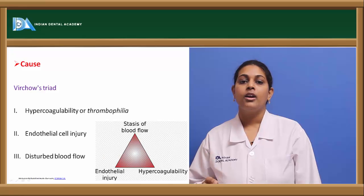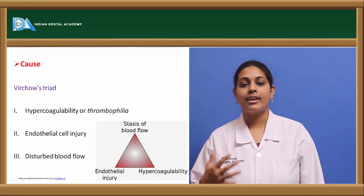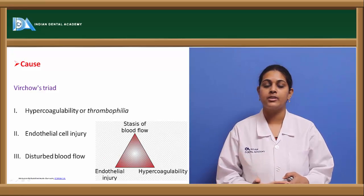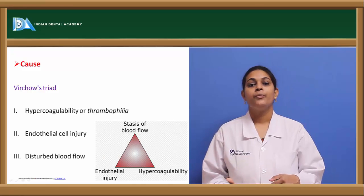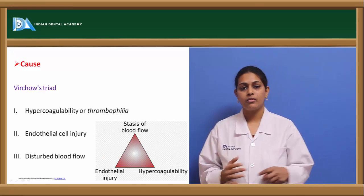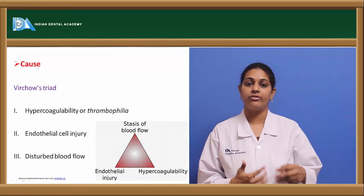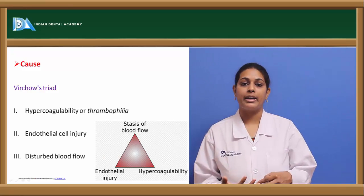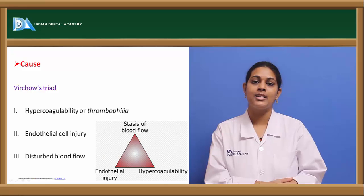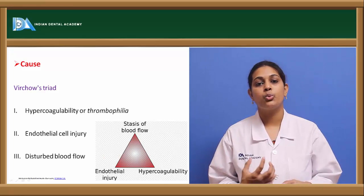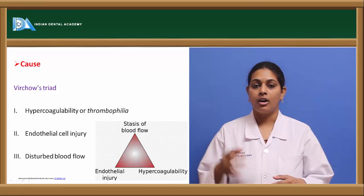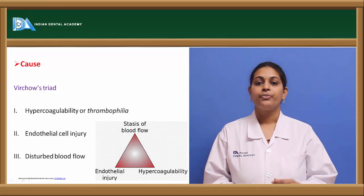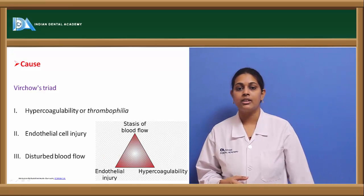The second cause is endothelial cell injury. When there is any endothelial cell injury, the underlying connective tissue present in the blood vessels becomes exposed. Once exposed, there is aggregation of platelets to the site of injury. This aggregation causes a release reaction from the platelets, leading to further accumulation of platelets that are enmeshed within a fibrin network, resulting in blockage and thrombosis.